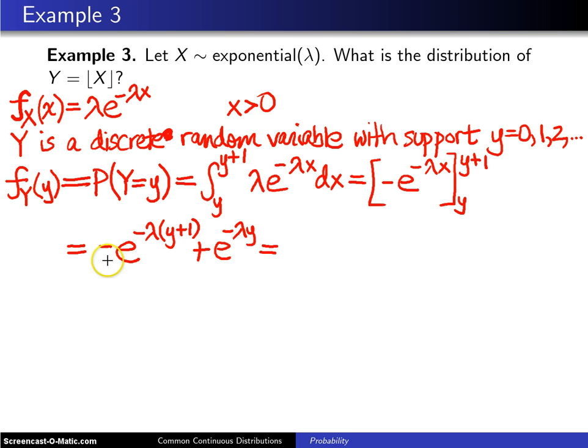One thing that can be factored out of both of these terms is an e to the minus lambda y. And what is left? In this case, a 1 is left over. And in this particular case, a negative e to the minus lambda power.